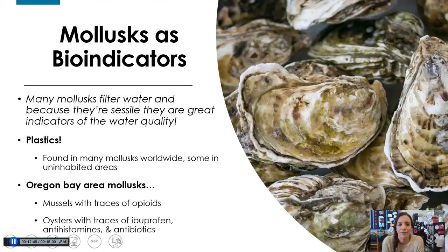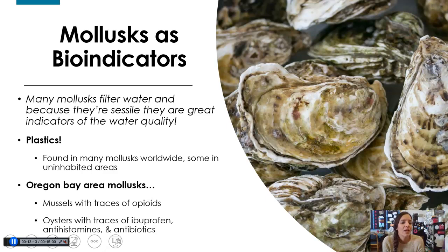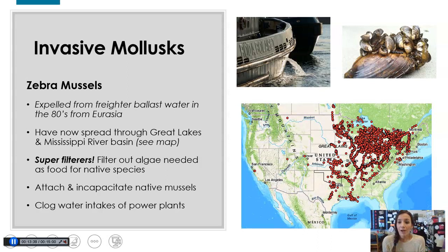Molluscs also have a really important role in the environment in that they are bio-indicators. Because they filter water and many of them don't move, they are great indicators of water quality. Plastic — back to ecology and human impact — has been found in many molluscs all over the world, even in uninhabited areas, meaning water currents are carrying it. In addition, in the Oregon Bay, mussels have been found with traces of opioids, and oysters have been found with traces of ibuprofen, antihistamines like Benadryl, and antibiotics — meaning those things are still ending up in our water and these molluscs are filtering them.